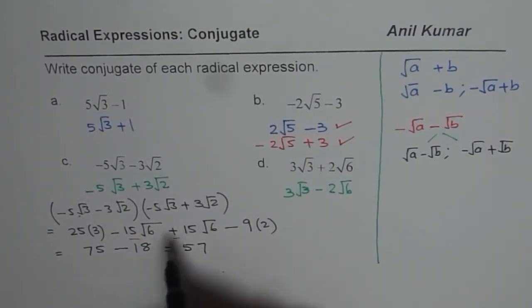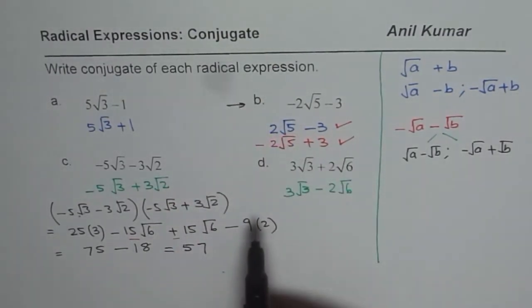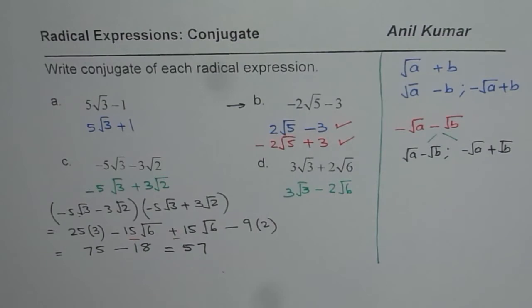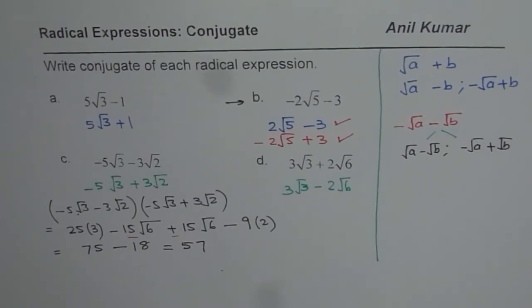I like you to do the same exercise for part B and check with your answer. Try both. Do you get the same answer? Once you conjugate, multiply with the conjugate, you get rid of the radical part. And that is the beauty of this. I hope you understand and appreciate the method. Thank you and all the best.